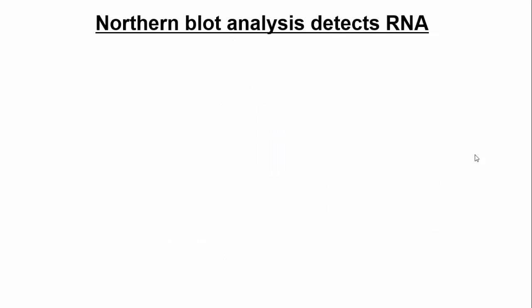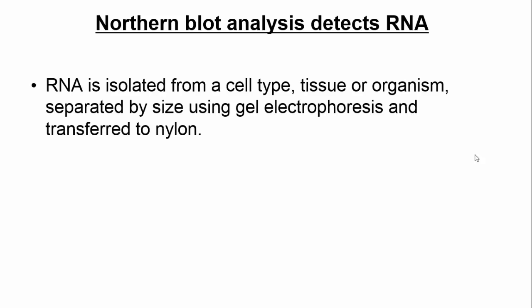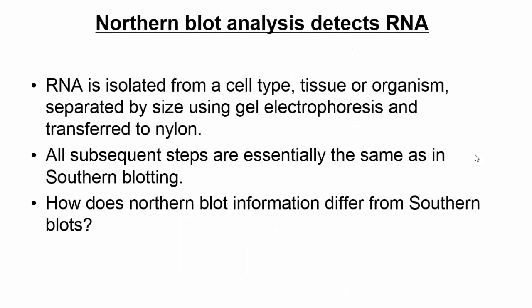A northern blot is almost identical to a southern blot with one very important difference: northern blots are used to detect RNA sequences instead of DNA. A southern blot tells you if a gene is present; a northern blot tells you if the gene is being transcribed — whether RNA is being produced from it. That's very different information.